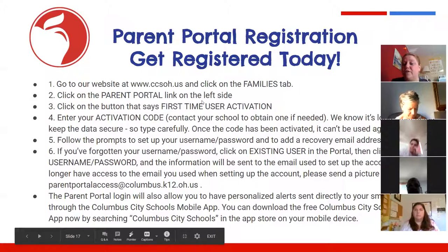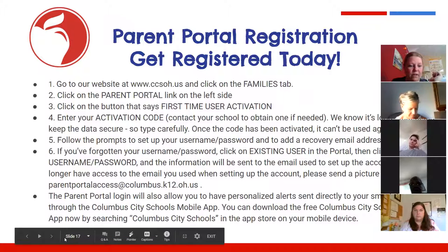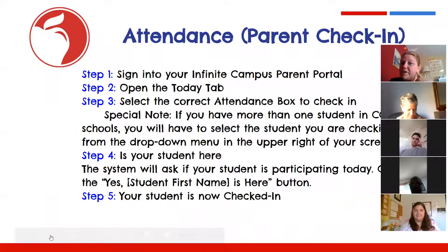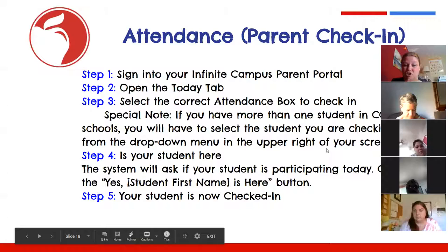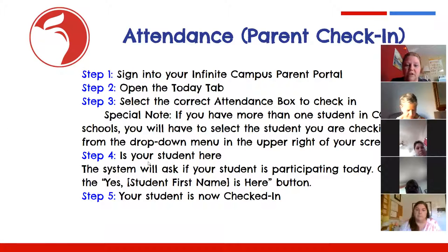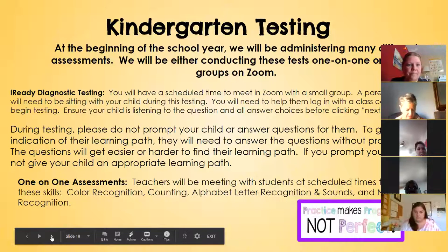Here are directions on how to register for the Parent Portal if you haven't done that yet — you'll need an activation code from the secretary to get started. Here are your step-by-step instructions for attendance: sign into Infinite Campus, the Parent Portal through Clever; open the Today tab; select your attendance box; if you have more than one student, select the student you're checking in; click Yes when it asks if your student is here and you're checked in.